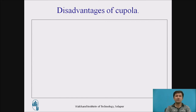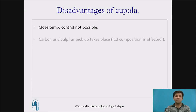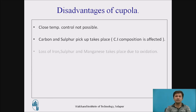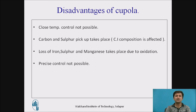The disadvantages of the cupola furnace are: close temperature control is not possible; carbon and sulfur pickup takes place, which can affect the cast iron composition; loss of iron, sulfur, and manganese occurs generally due to oxidization; precise control is not possible compared to an induction furnace; and environmental pollution occurs even though there is a spark arrestor.